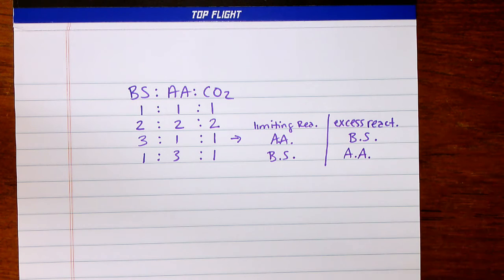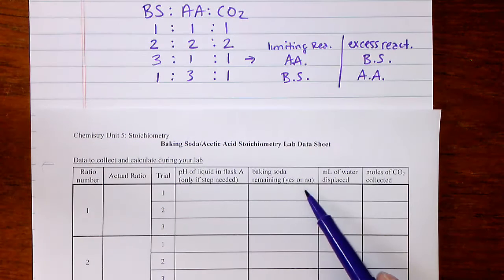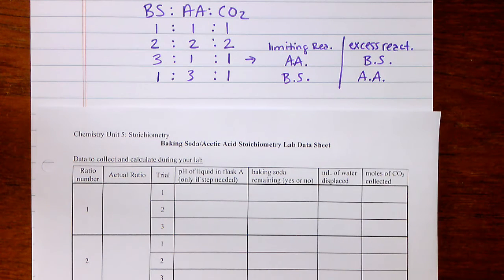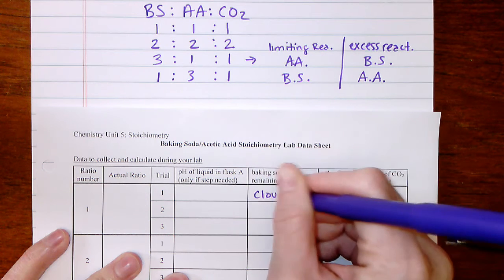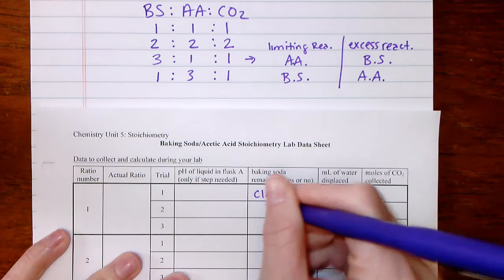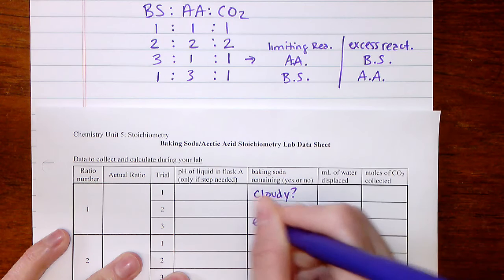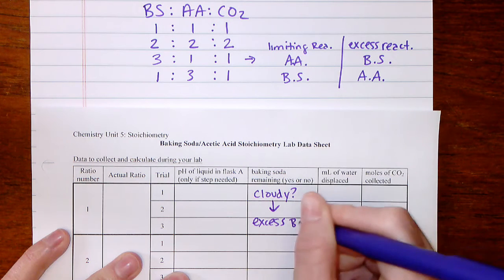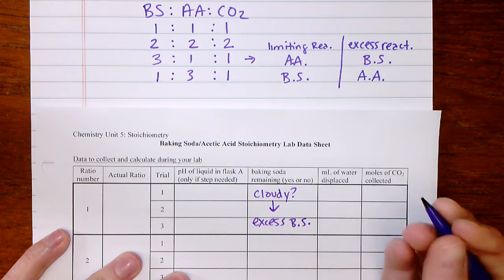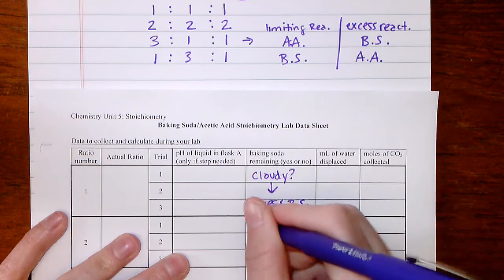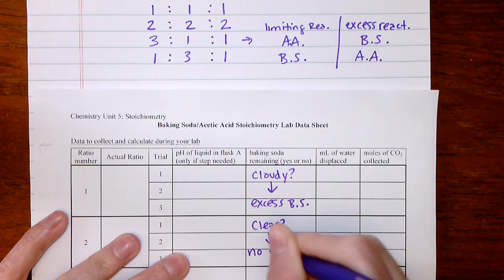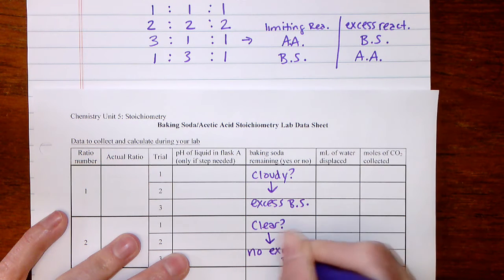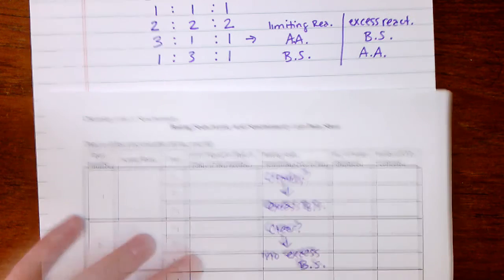The baking soda presence is really easy to tell — it's just a yes or no: is the solution cloudy or not? If the substance in flask A was cloudy, we have excess baking soda. If it was clear, we have no excess baking soda.